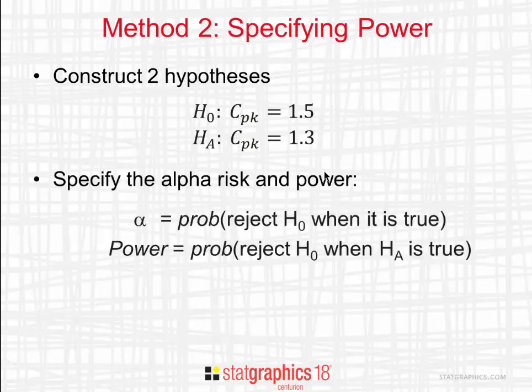That's typically done by specifying the alpha risk and the power of the test. Alpha would be the probability of rejecting the null hypothesis when it was true. Power would be the probability of rejecting H0 when the alternative was true. I'd specify a small value for alpha, a large value for the power, and let the program figure out what the sample size needs to be.